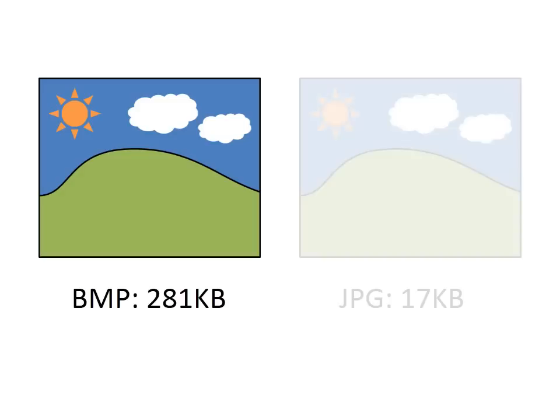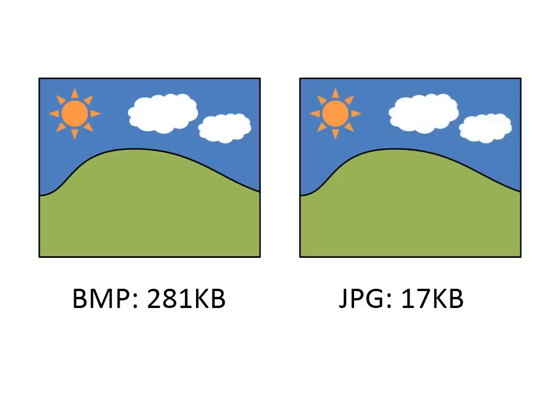We all know that saving pictures in JPEG will save us a lot of hard drive space. But have you ever wondered how JPEG works? Why can we convert an image format to another, making it significantly smaller in file size without much quality loss?